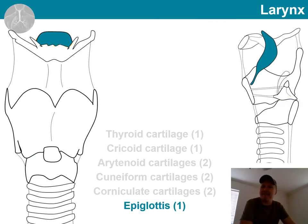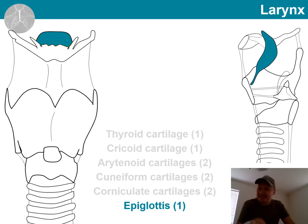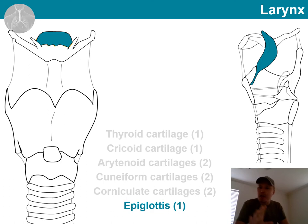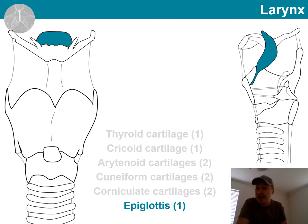Next, we will look at the epiglottis. The function of this flap-like structure is to close and seal off the respiratory pathway when one swallows. At all other times, it is open. This is important because maintaining a clear airway is one of our top priorities.